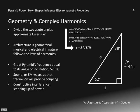If you divide the two acute angles in the pyramid, you get a good approximation for E, Euler's number. It's used in music, geometry, and electricity. It follows the laws of complex harmonics like architecture in general. As Goethe said, architecture is frozen music. The Great Pyramid's frequency is equal to its angle of inclination, so 52 Hertz. Sound waves at that frequency will provide coupling, constructive interference, and step up power.